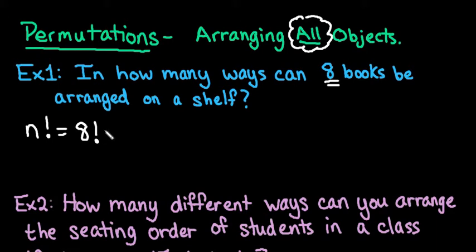8 factorial really means 8 times 7 times 6 times 5 times 4 times 3 times 2 times 1. This is why we use the factorial and it's programmed into your calculator, because it's much shorter to just push the button.